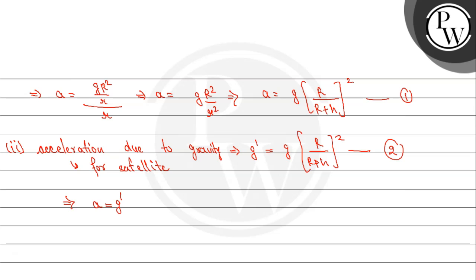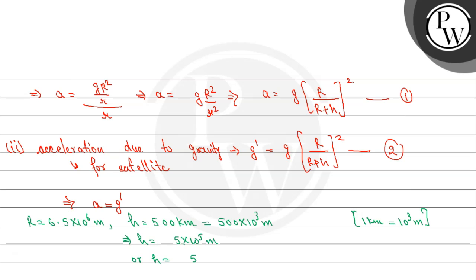Now we substitute values into the formula. R is given as 6.5 × 10⁶ m. H is given as 500 km, which equals 500 × 10³ m = 5 × 10⁵ m = 0.5 × 10⁶ m. The value of g, acceleration due to gravity at the surface of Earth, is 9.8 m/s².